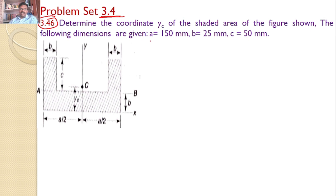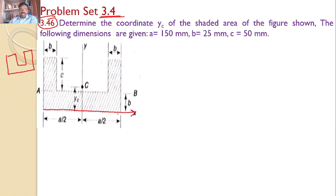The following dimensions are given: a is equal to 150, b is equal to 25, c is equal to 50. That means here I can find a shape like this. Our interest is to find the centroid for this area. The bottommost one is given as the x-axis and this one is given as the y-axis. With reference to this x and y-axis, I would like to find the centroid.